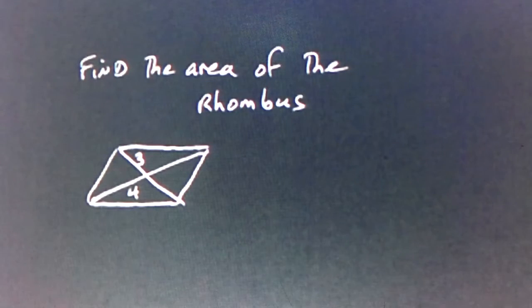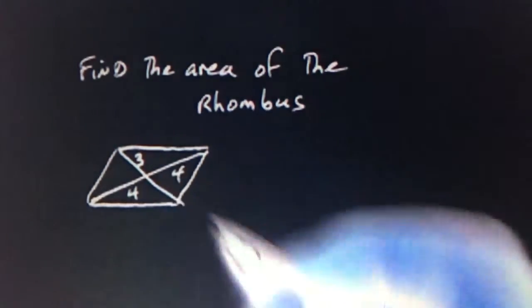So you have to go back to the properties of a rhombus, perpendicular bisectors. Well, what does that mean? Well, first of all, a bisector means it's in half. So we're given 4 for this segment here. That means we can write in 4 for this segment here.